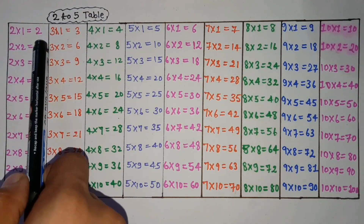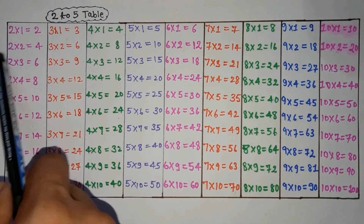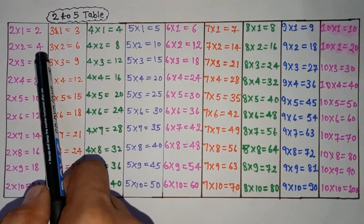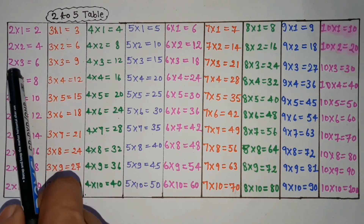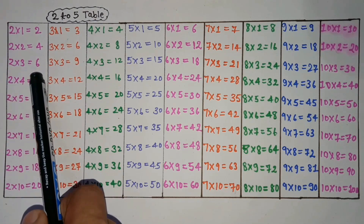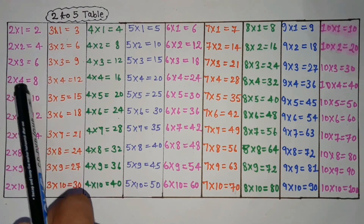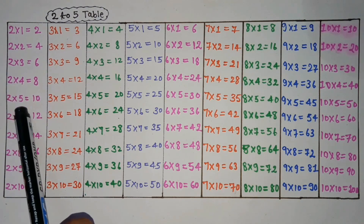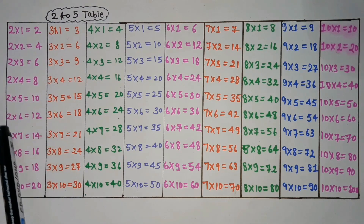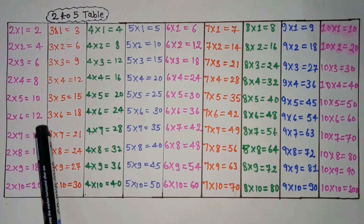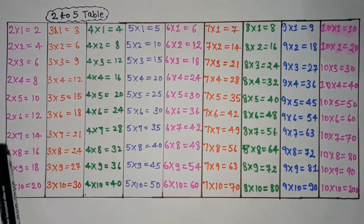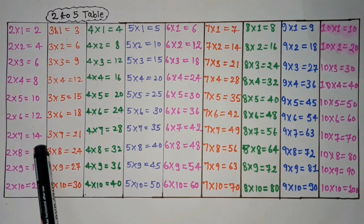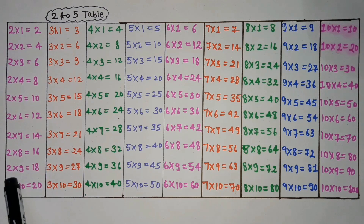2 ones are 2. 2 twos are 4. 2 threes are 6. 2 fours are 8. 2 fives are 10. 2 sixes are 12. 2 sevens are 14. 2 eights are 16. 2 nines are 18.